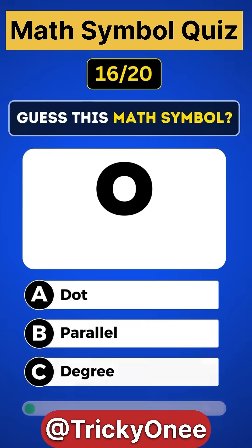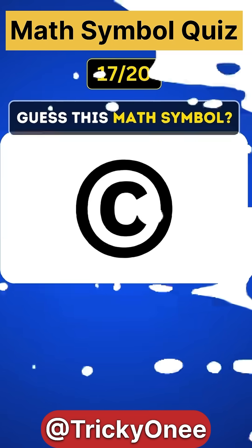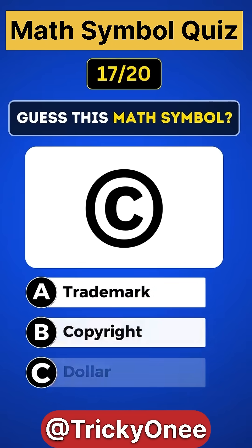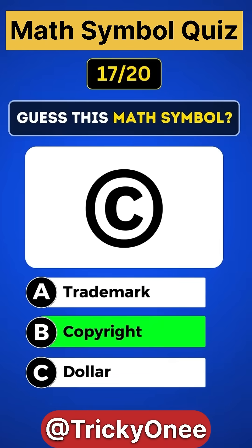Which math symbol is this? Answer C — degree. Can you guess this math symbol? Answer B — copyright.